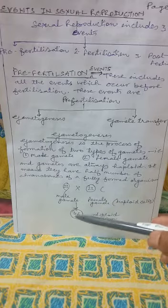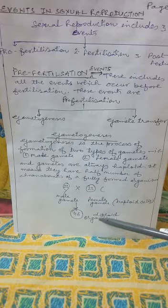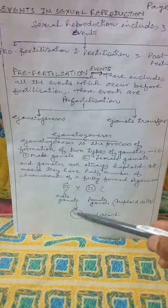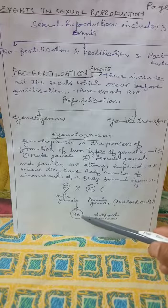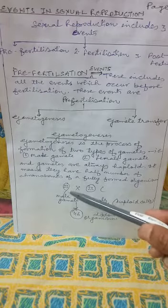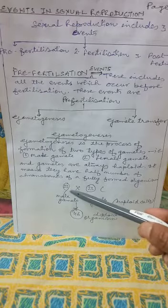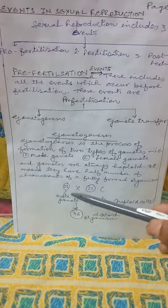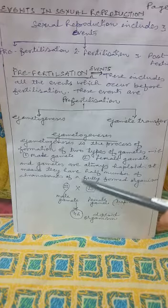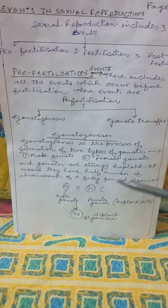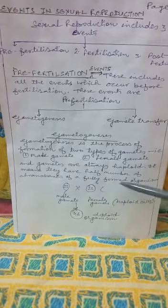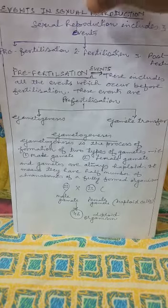Here you can see with the help of an example: these are the gametes. When they fuse, they form the diploid organism — the complete organism which consists of 46 chromosomes. The gametes consist of half the number of chromosomes. So we can say that gametes have half the number of chromosomes of a fully formed organism.